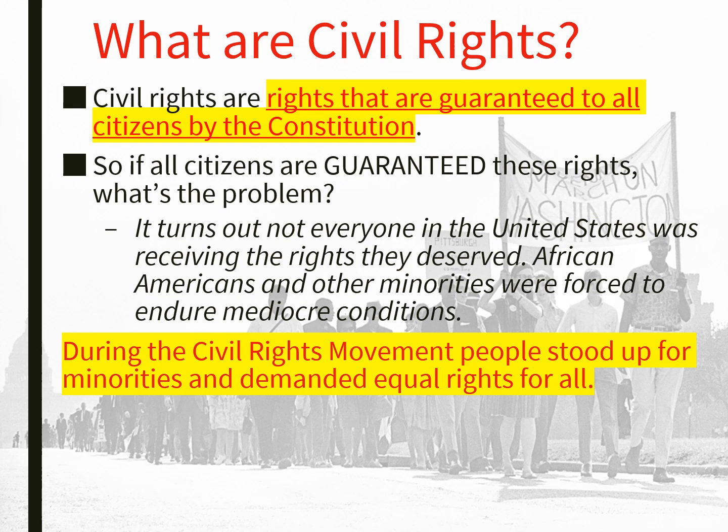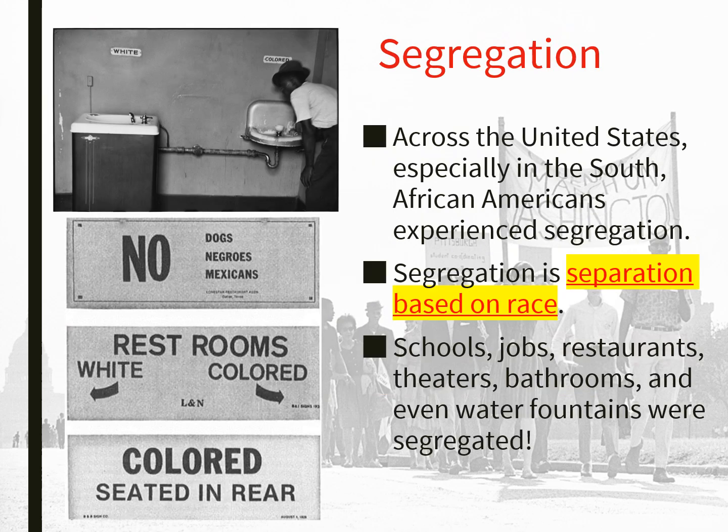One of the biggest issues that came about after the Civil War, when all slaves were freed, was something called segregation. Segregation is the separating of people based on their race. All across the United States — especially in the South, but also in the North, East, and West — segregation flourished. Today we have segregation by all types of things.